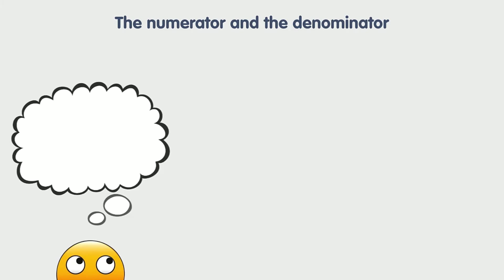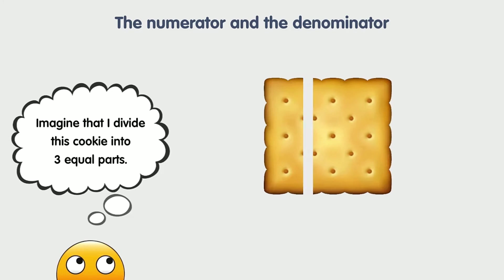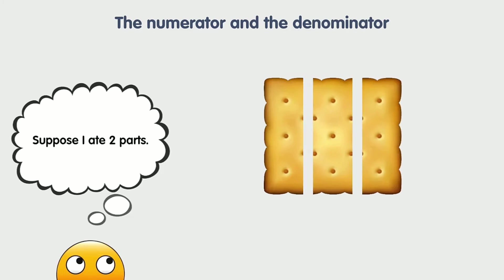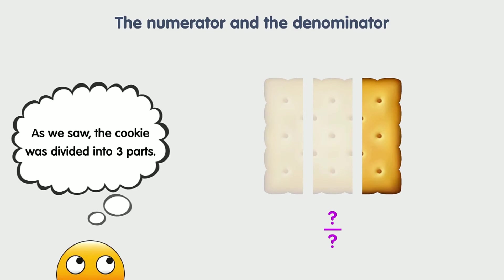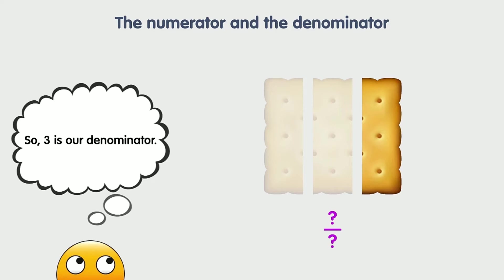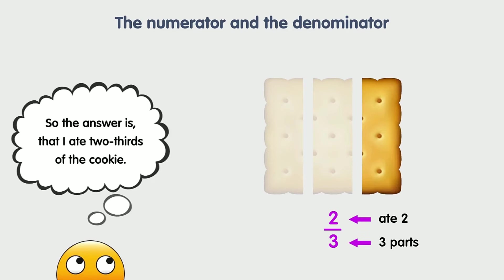Let's look at another example. Here is another cookie. Imagine that I divide this cookie into three equal parts. Suppose I ate two parts. What fraction of the cookie did I eat? The cookie was divided into three parts, so three is our denominator. I ate two parts, so two is our numerator. The answer is that I ate two thirds of the cookie.